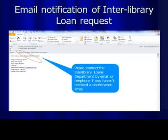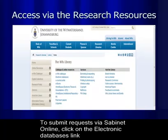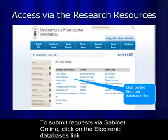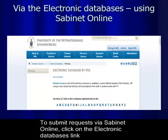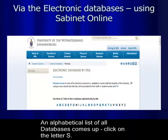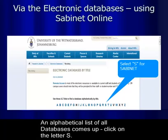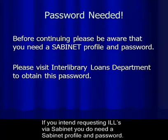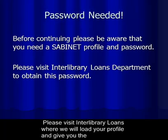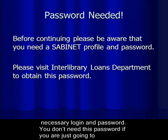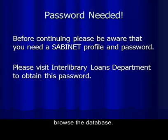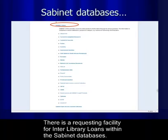To submit a request via SubNet online, click on the electronic databases link. An alphabetical list of all databases comes up — click on the letter S. If you intend to request ILL via SubNet, you do need a SubNet profile and password. Please visit interlibrary loans and we will set up your profile and provide the necessary login and password. You don't need this password if you are just browsing the database.